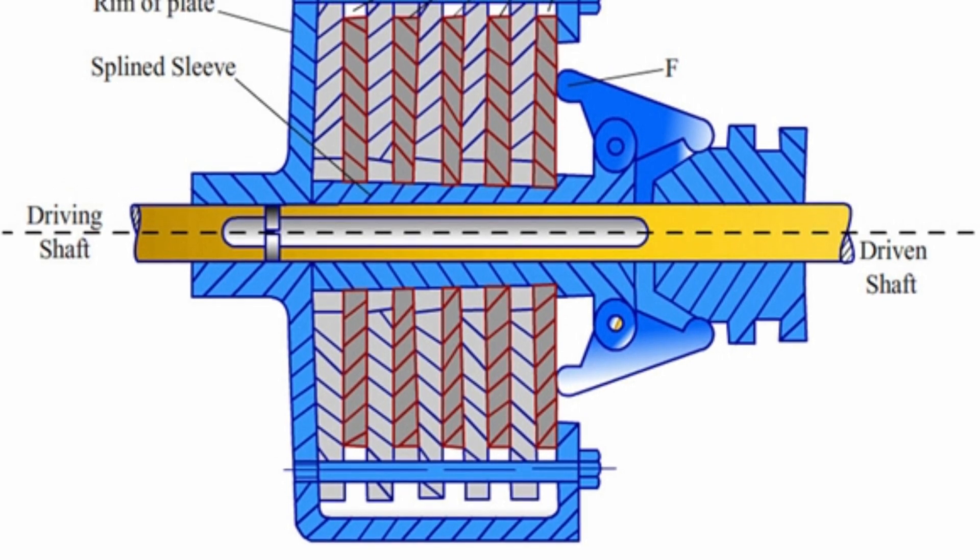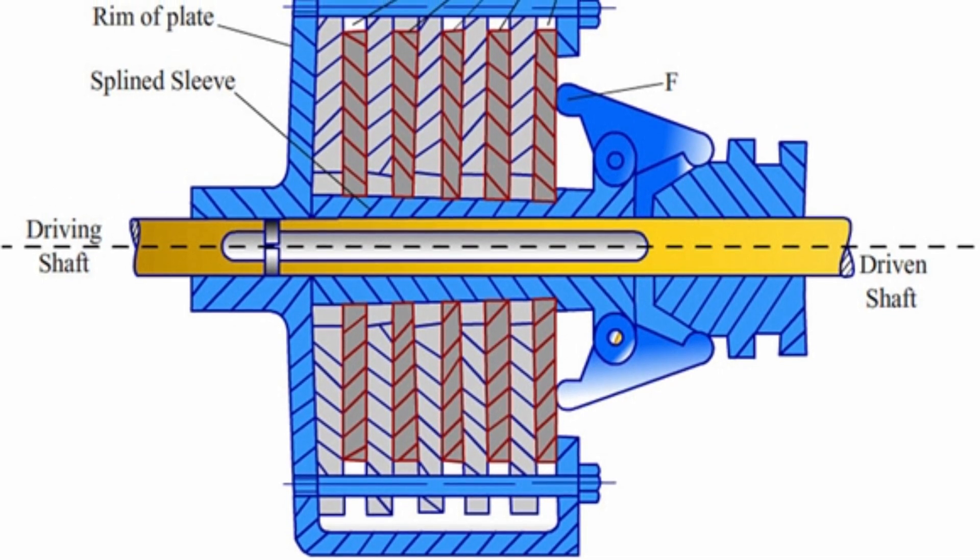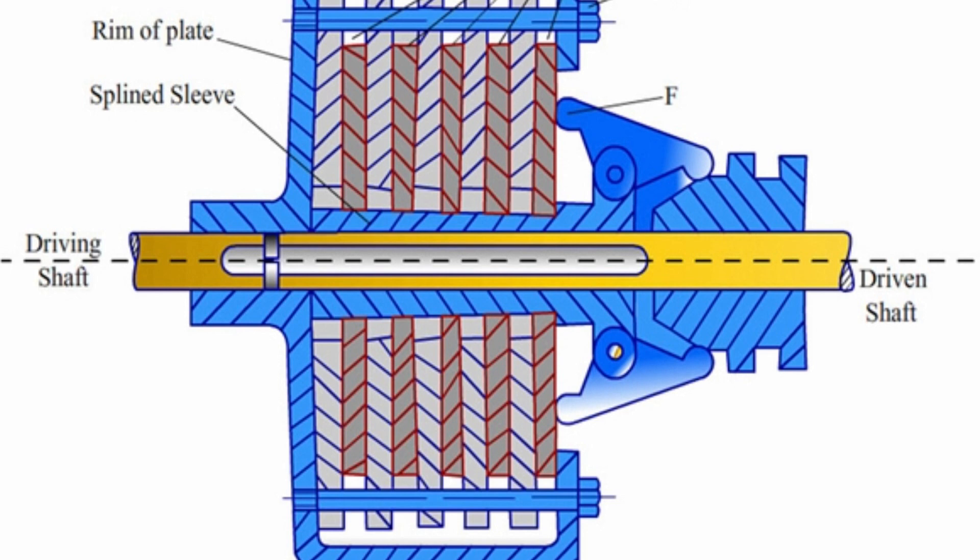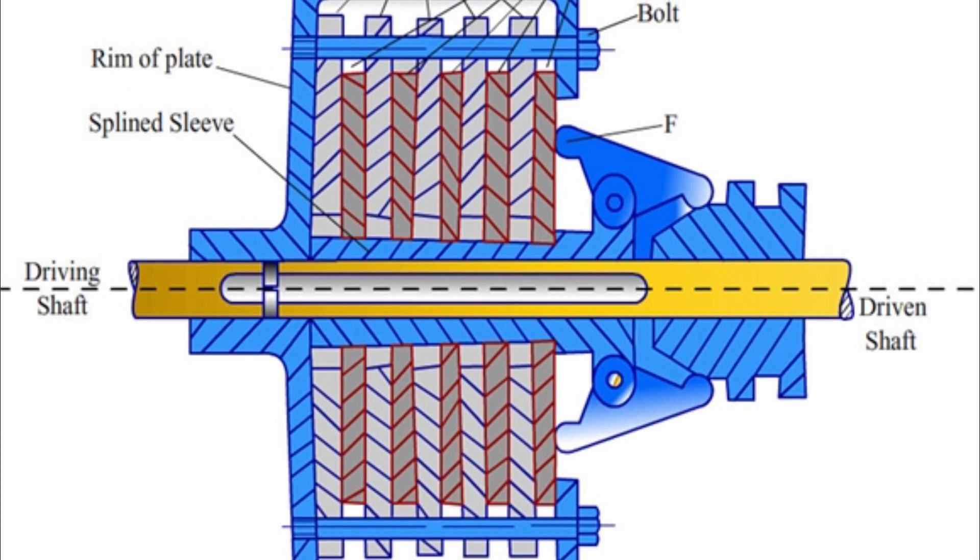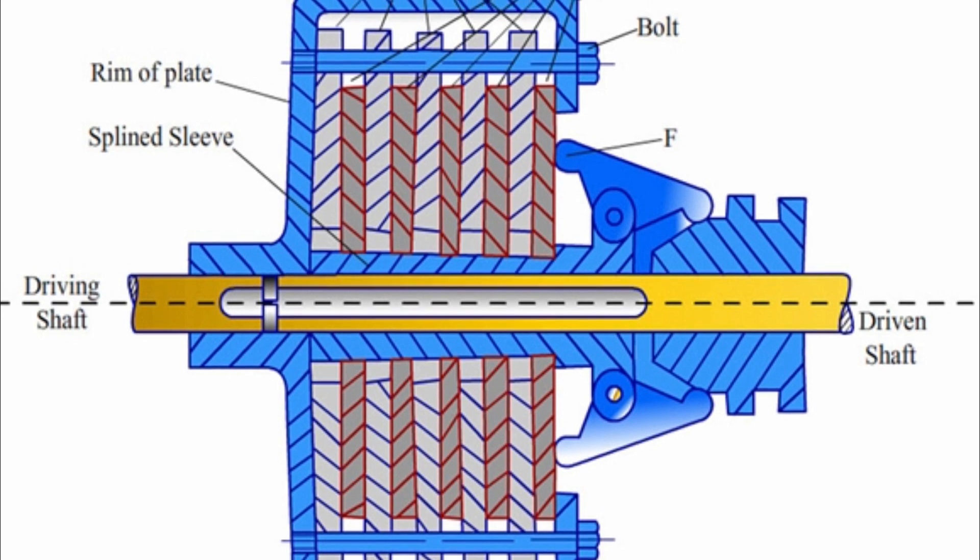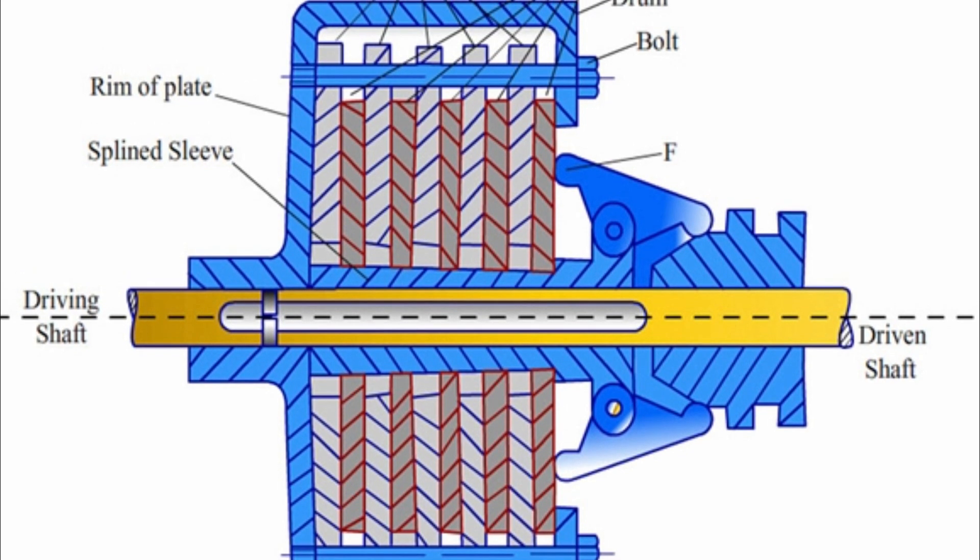A multi-plate clutch is a type of clutch in which multiple clutch plates are used to make frictional contact with the flywheel of the engine in order to transmit power between the engine shaft and the transmission shaft of an automobile vehicle.